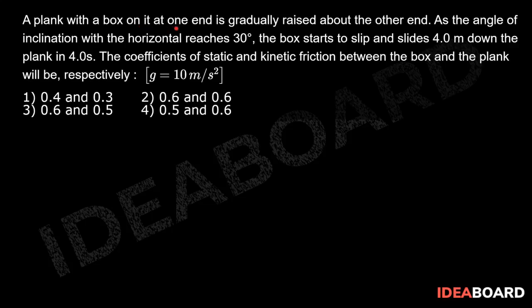A plank with a box on it at one end is gradually raised above the other end. As the angle of inclination with the horizontal reaches 30 degrees, the box starts to slip and slides 4.0 meters down the plank in 4.0 seconds. The coefficients of static and kinetic friction between the box and the plank will be, respectively. Given g equals 10 meters per second squared.